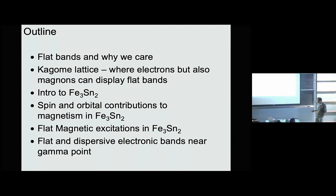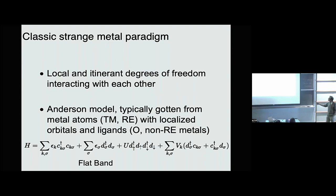The classic strange metal paradigm is something like the Anderson model. The flat bands come from localized orbitals — let's say d or f orbitals — and those orbitals talk to various other electrons, s, p electrons, which live in a non-flat band. This is the classic paradigm which gives rise to all the wonderful physics in heavy fermion systems and probably also quite a few transition metal oxides.